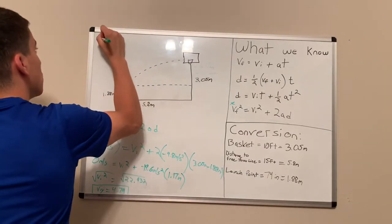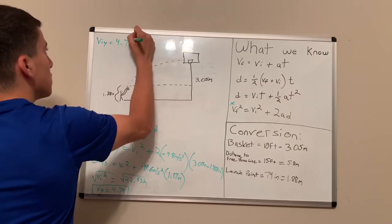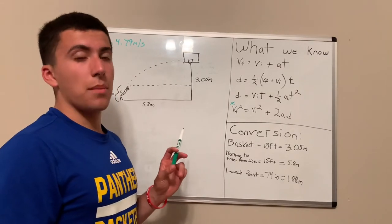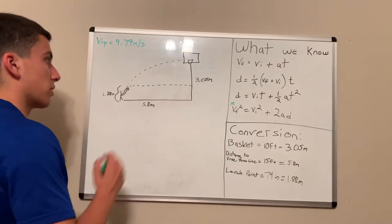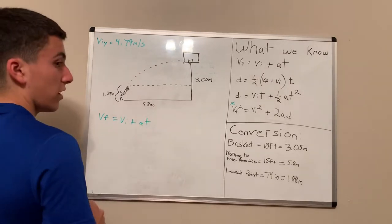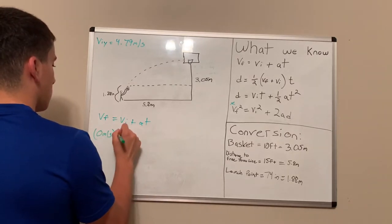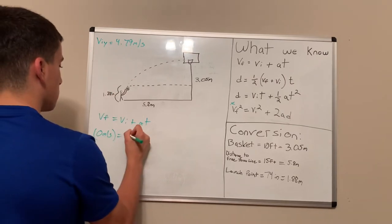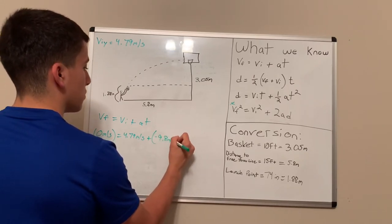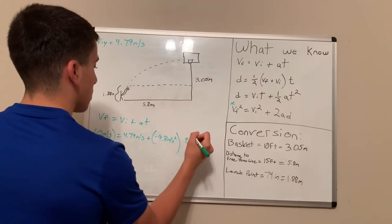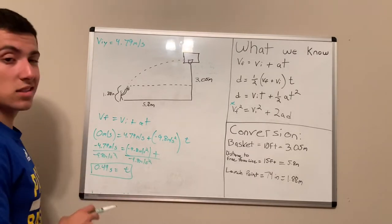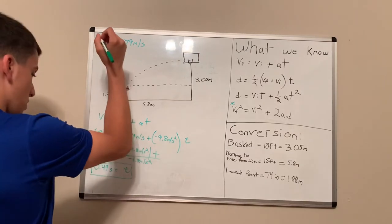V_iy equals 4.79 meters per second. After finding the velocity in the y-direction, we can now find the time of the ball at the top of its trajectory. Using V_f = V_i + at, we know V_f is 0 m/s, V_iy is 4.79 m/s, and acceleration is -9.8 m/s². After doing the math, I came out with 0.49 seconds as the time for the ball to reach the top of its trajectory.